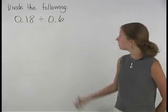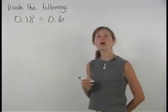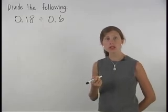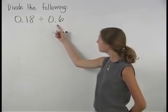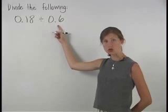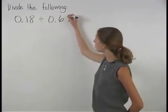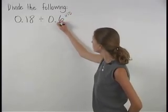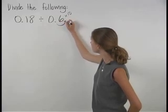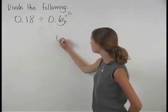We already know how to divide a decimal by a whole number. So in this problem, let's begin by changing 0.6 to a whole number by multiplying by 10, which moves the decimal point one place to the right and gives us 6.